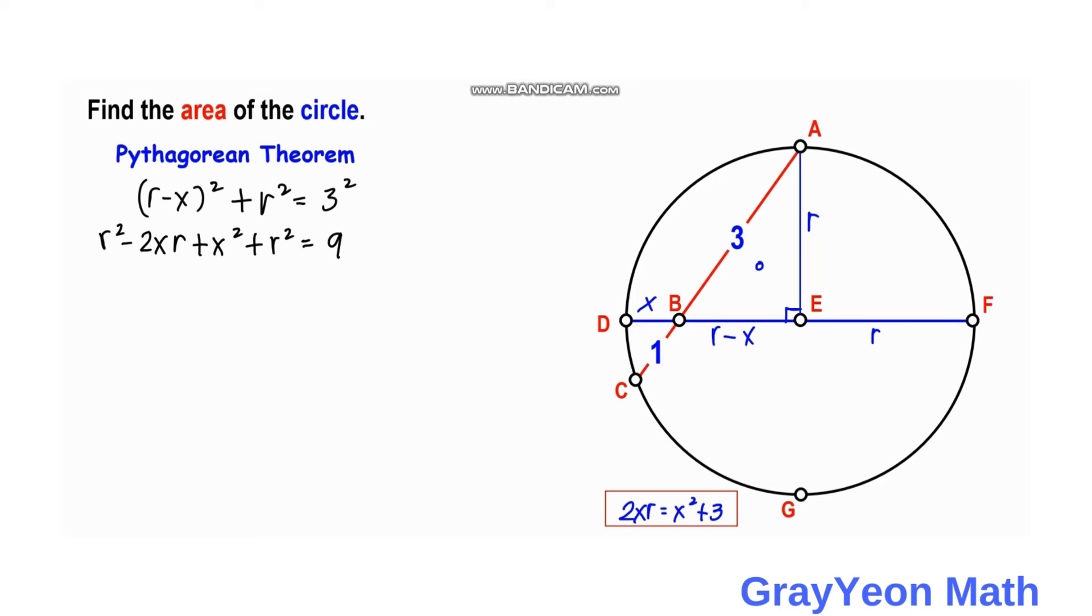Simplifying, we combine R squared and R squared to get 2R squared minus 2XR plus X squared equals 9.